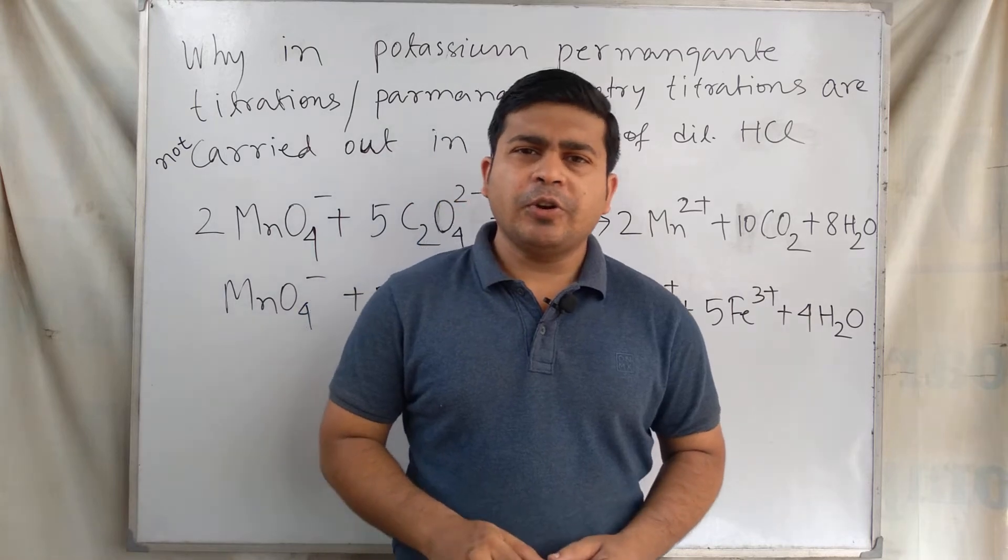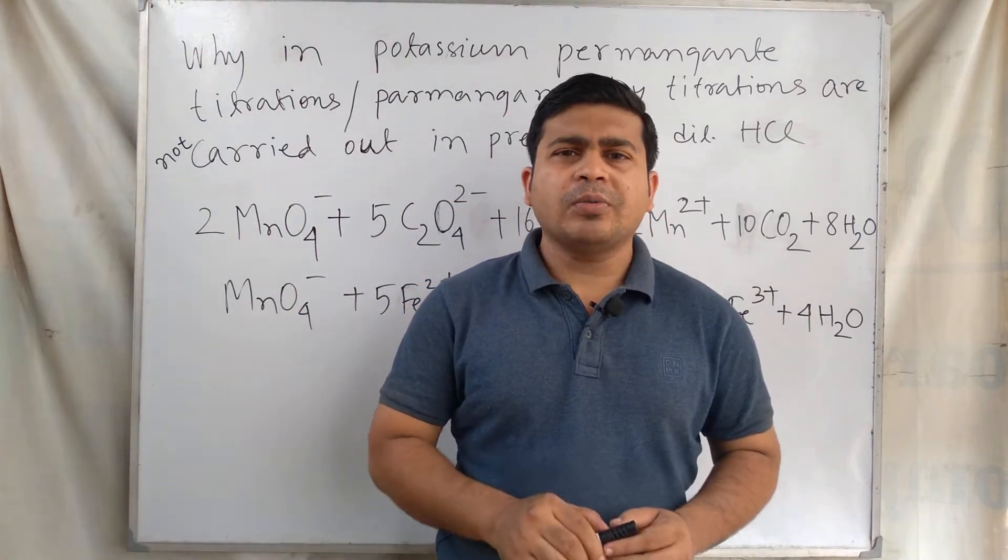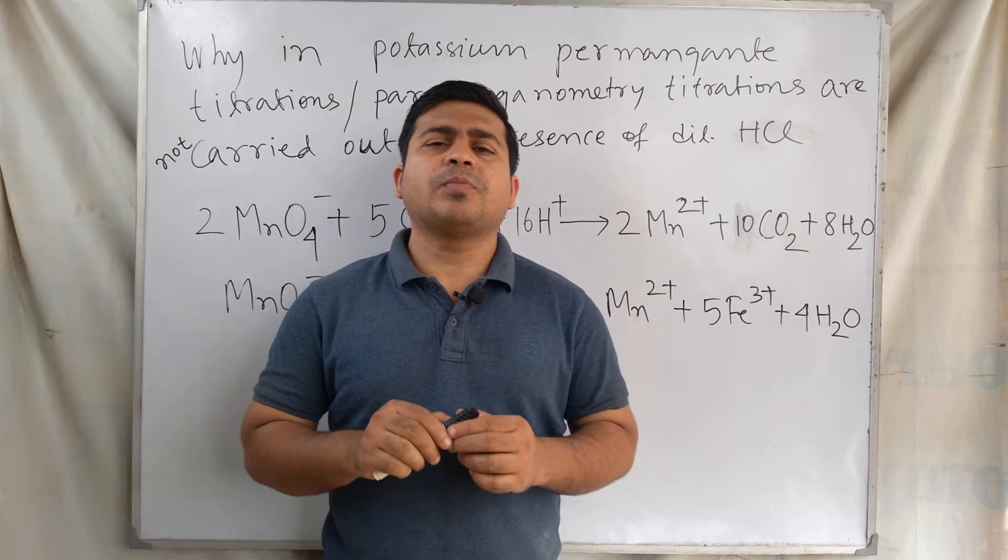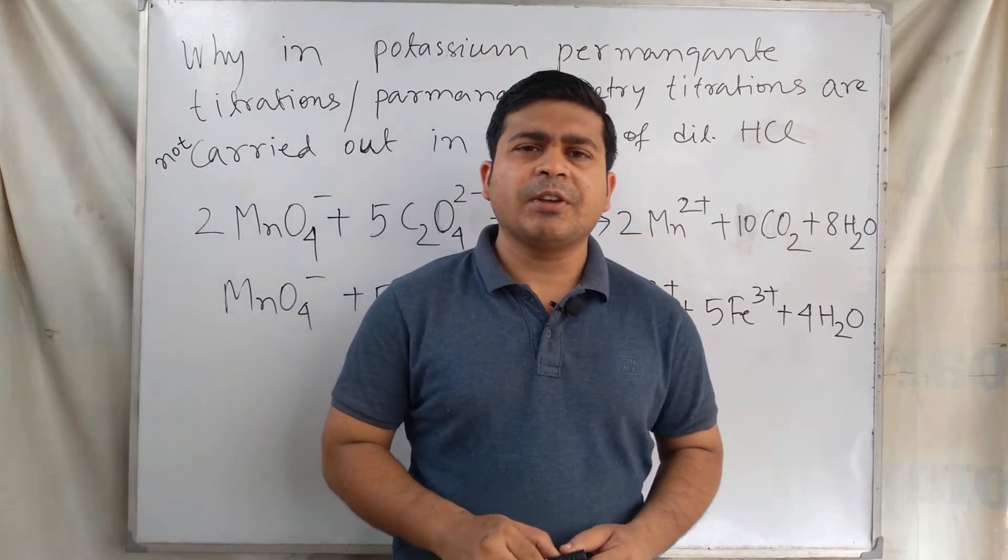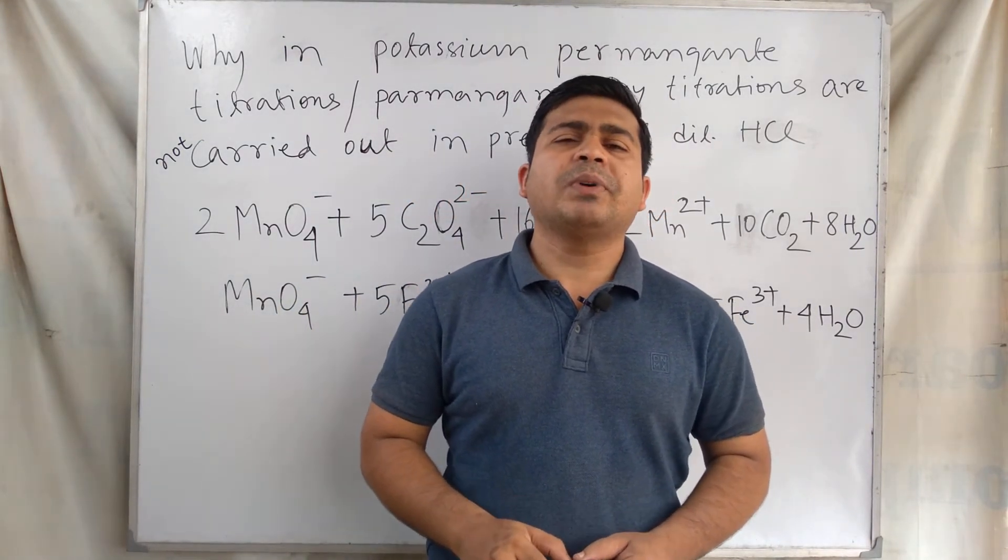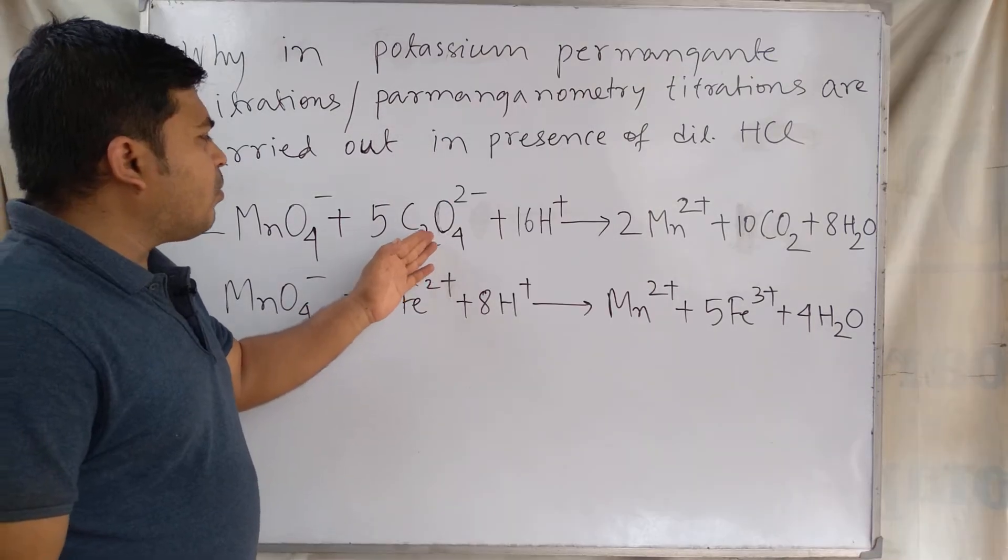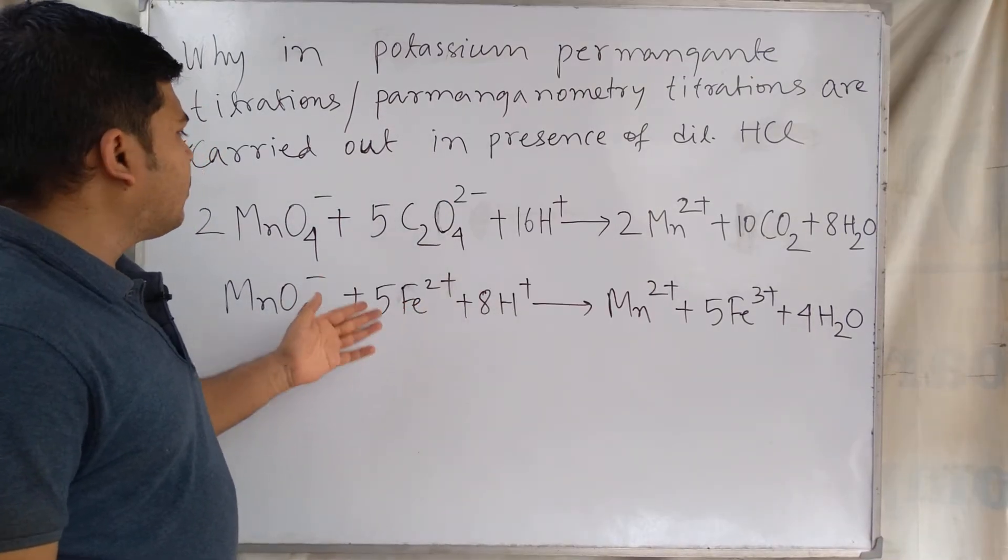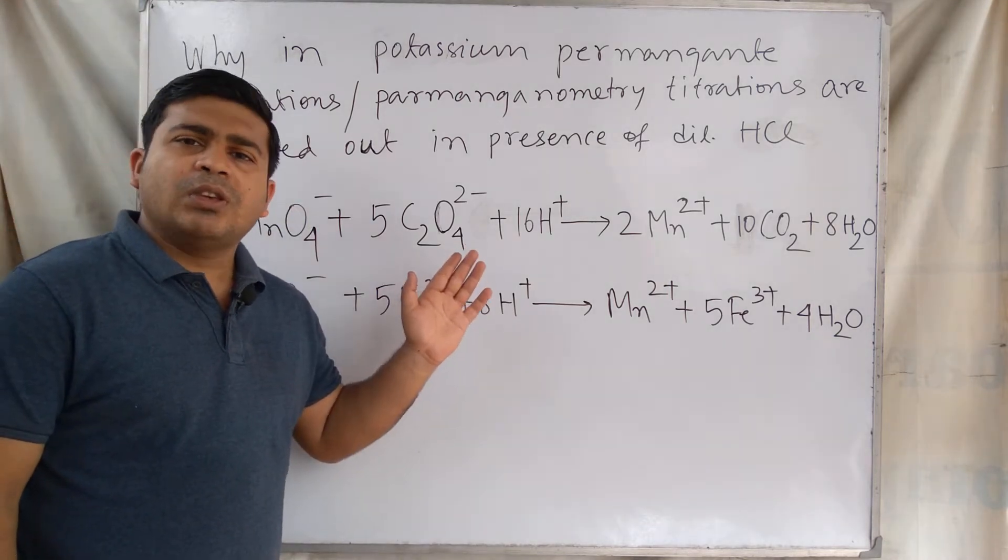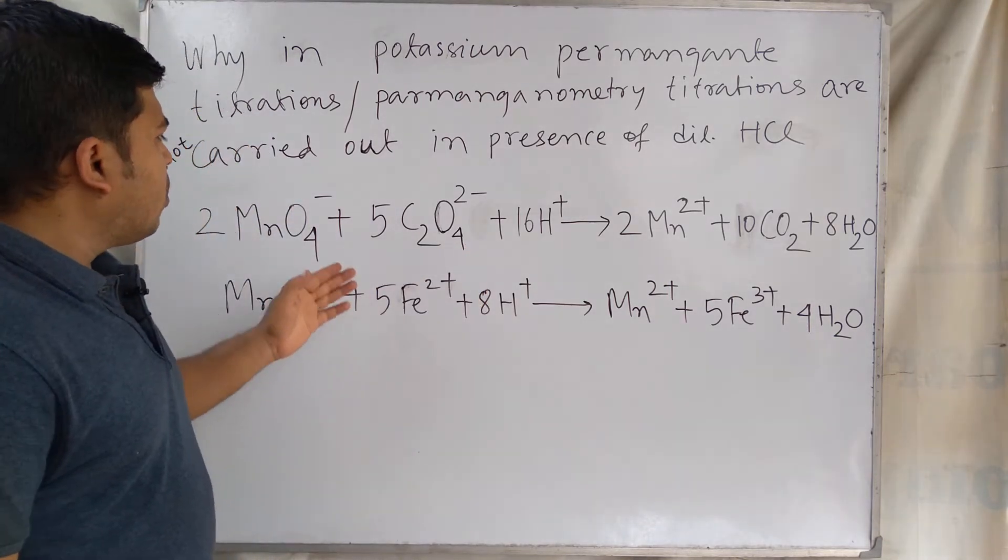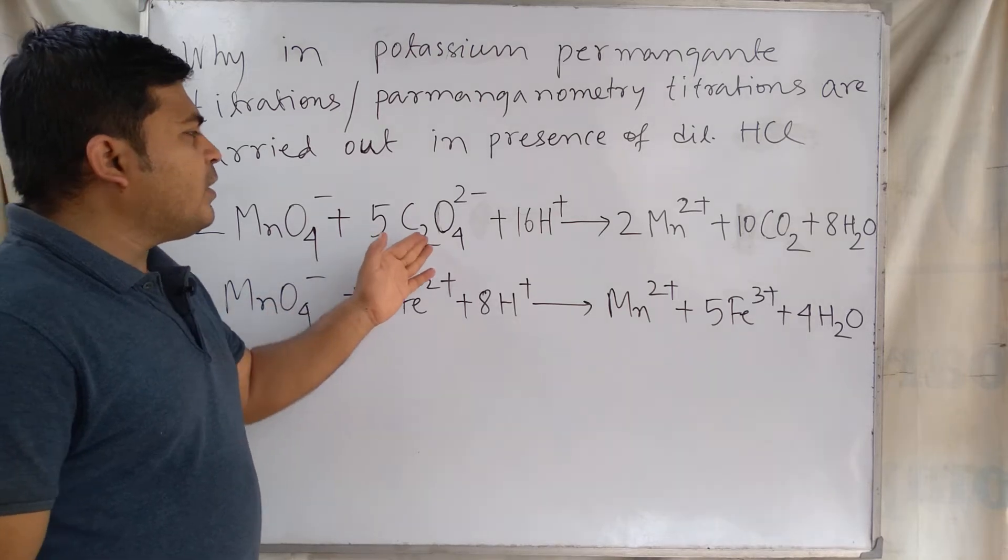Dilute hydrochloric acid cannot be used. Potassium permanganate titrations cannot be carried out in presence of dilute hydrochloric acid. Quantitative estimation of oxalate, ferrous, and halides uses potassium permanganate solution. Potassium permanganate quantitatively oxidizes oxalate, ferrous, and other reducing agents.